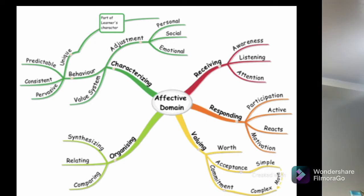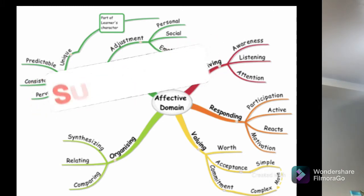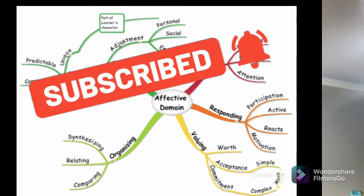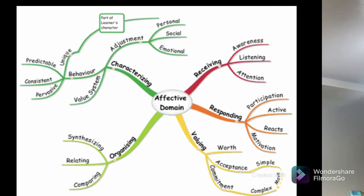In valuing, there are also three sub-levels. The lowest is acceptance of a value — such as the value of honesty, integrity, or being a listener. The second is preference for a value: when faced with a circumstance such as seeing a student cheat, the student must choose whether to be honest or not. And the last is commitment — meaning in his entire life, even outside of school, at home or in the workplace, he will be committed to that value or virtue.